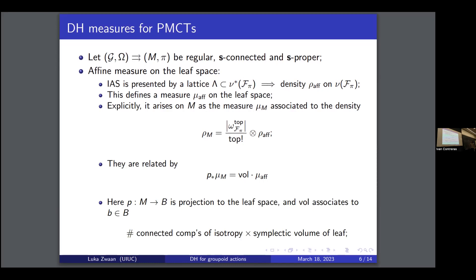You pick up the symplectic volume of the leaf — but not quite. There is an integer in front for technical reasons: it picks up the number of connected components of the isotropy groups over the leaf. You can think of it as: nearby leaves can be covers of each other, and that integer is the number of sheets. Without it, this function is not smooth in general; with it, it is smooth.